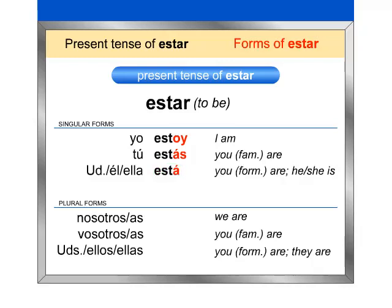Now repeat after me the plural forms. Nosotros, nosotras, estamos. Vosotros, vosotras, estáis. Ustedes, ellos, ellas, están.